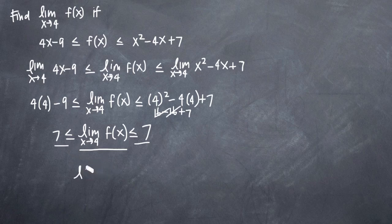So we know that the limit as x approaches 4 of f(x) has to equal 7. In an inequality like this, that's how we solve the limit of f(x).